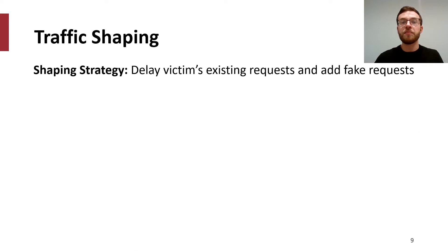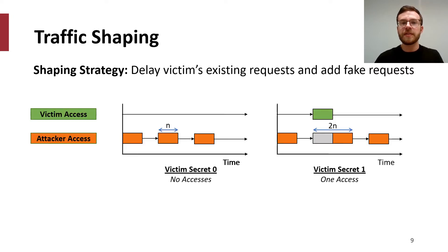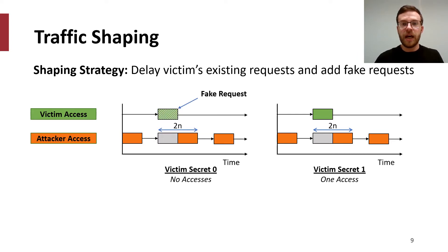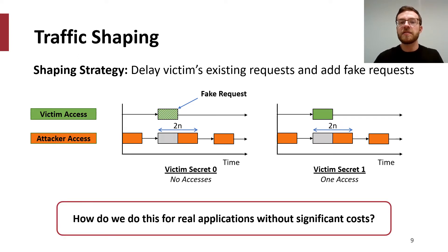On the other hand, a more general and less rigid approach can be found in traffic shaping. The strategy for traffic shaping is to delay existing requests and add fake requests such that the victim request patterns look indistinguishable from one another. Consider our previous leaky example: traffic shaping can insert a fake request—a request that goes to memory but isn't associated with an actual victim request—making the observations seen by the attacker identical. This begs the question of how this is done for actual programs with complex access patterns without incurring a significant performance penalty.